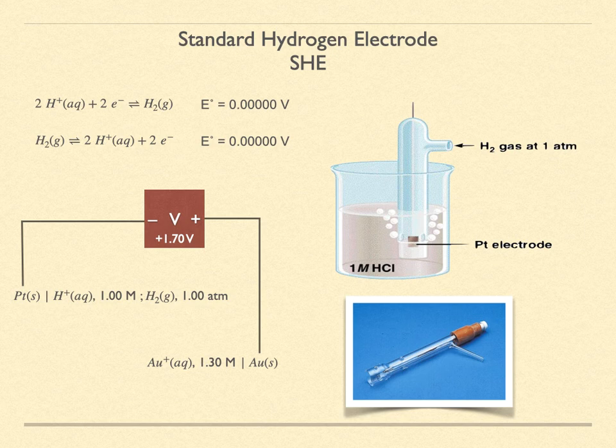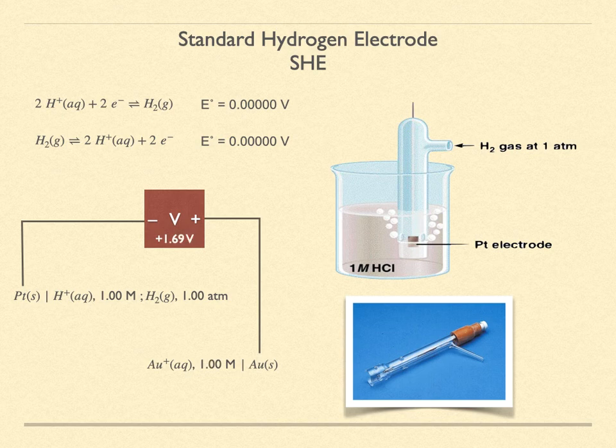The voltage recorded on the voltmeter is assigned as the potential of the test half-cell. If that half-cell has been formed with standard conditions — gases at 1 atmosphere and solutes at 1 molar — then it is the standard reduction potential for that cell. The table of standard reduction potentials is formed by placing each test cell formed using standard conditions in sequence, connecting it to the positive terminal of the voltmeter, and recording the reading as the standard reduction potential for that test cell.